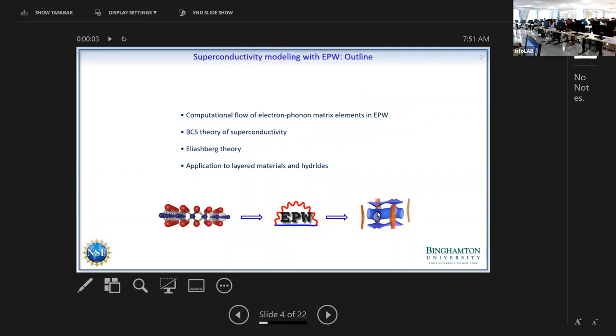To start, I will review briefly the computational flow of electron-phonon matrix elements in EPW. Since not everybody here is doing superconductivity, I will just give a very brief overview of BCS theory and then a bit more details about Eliashberg formalism of superconductivity, which is implemented. Then I will show two short examples, one of which will be used in our first tutorial today.